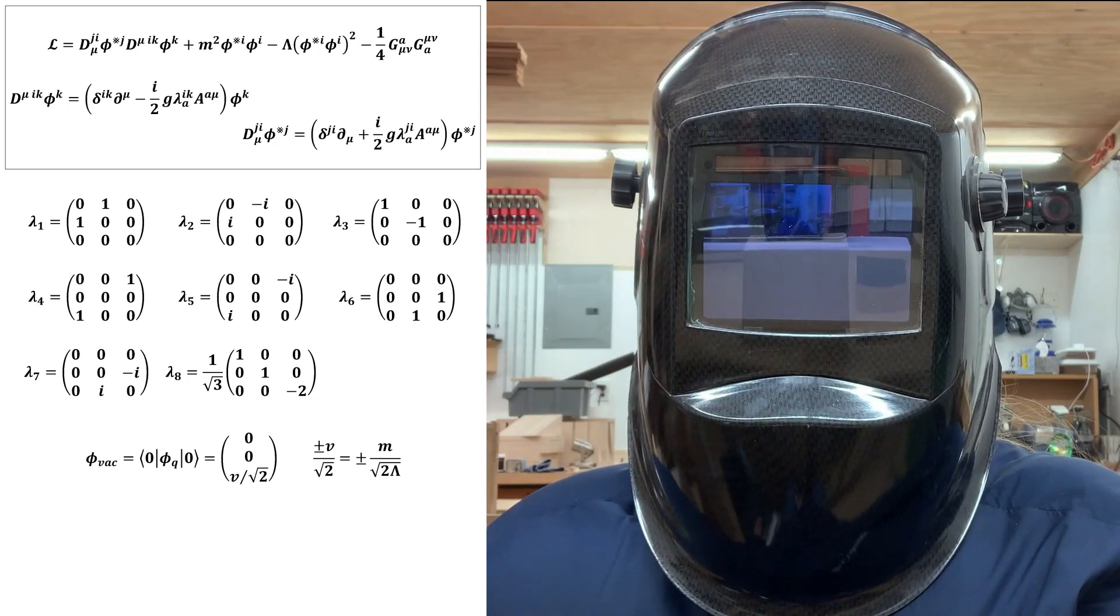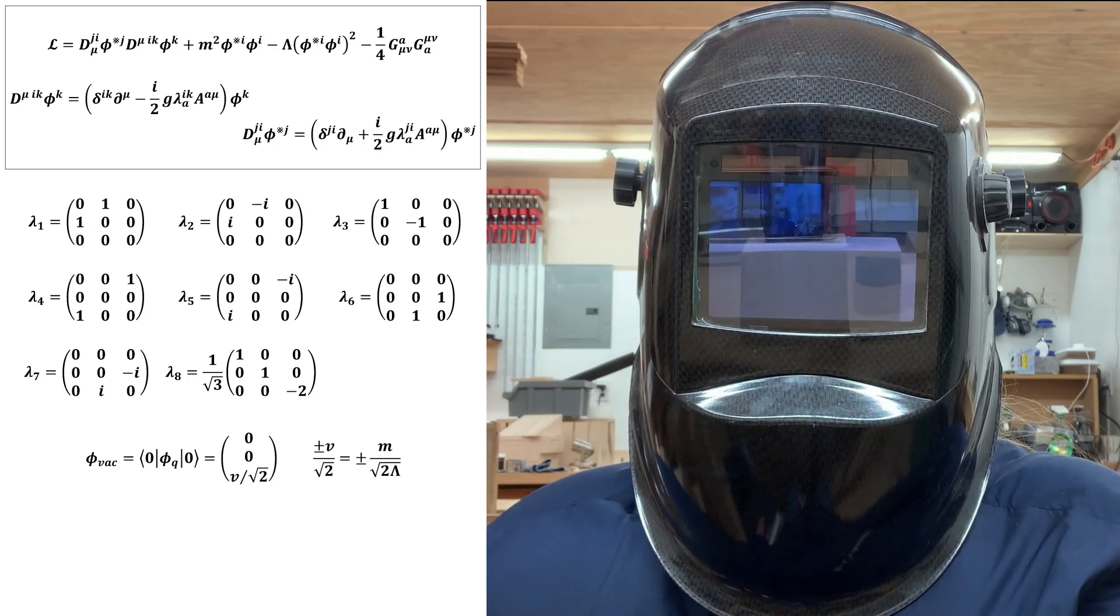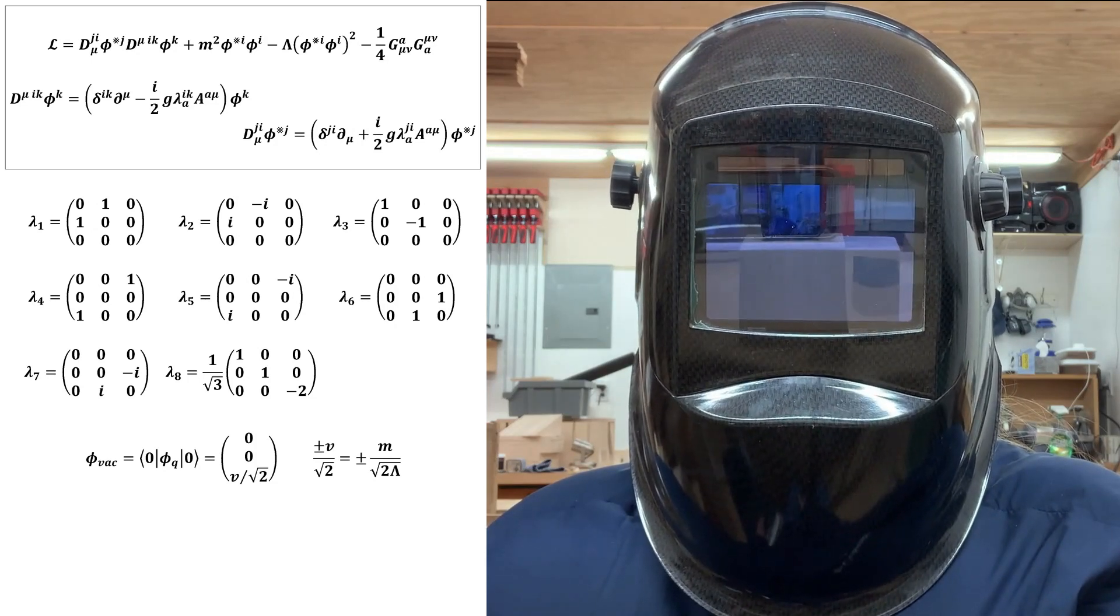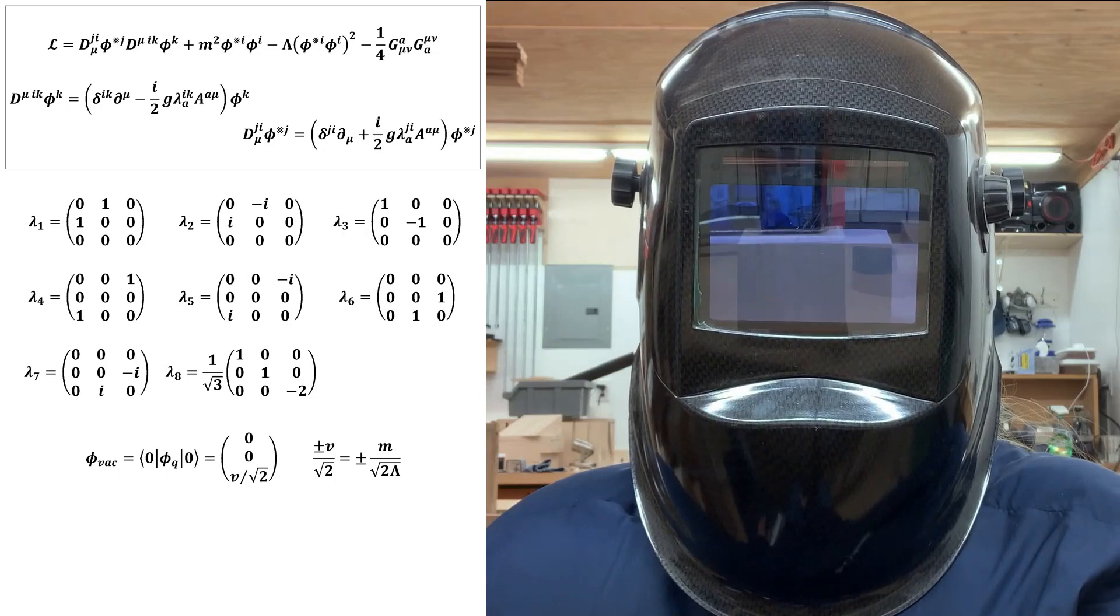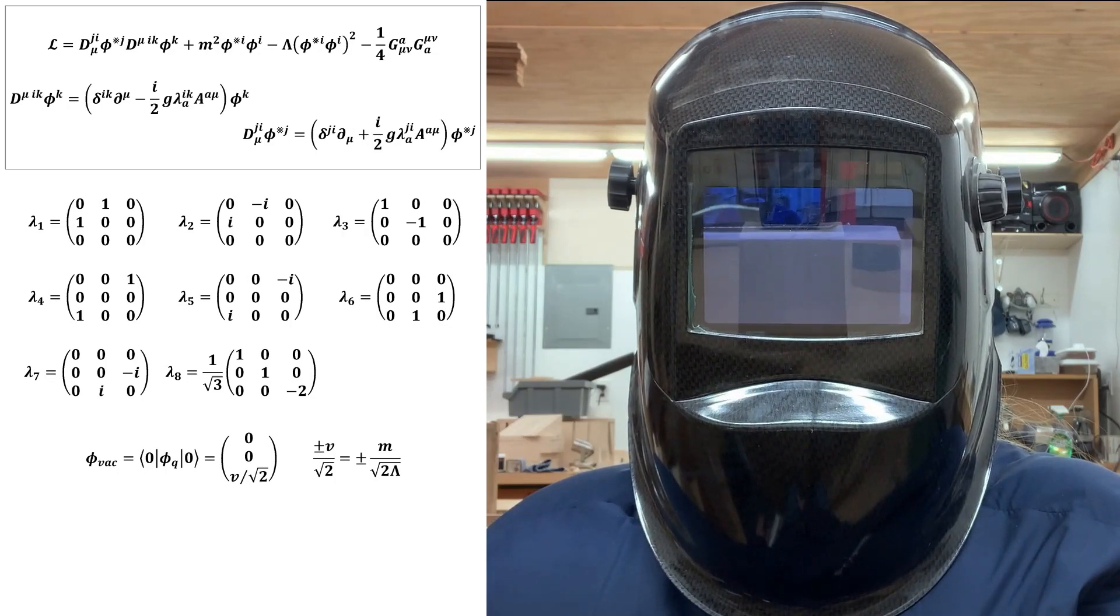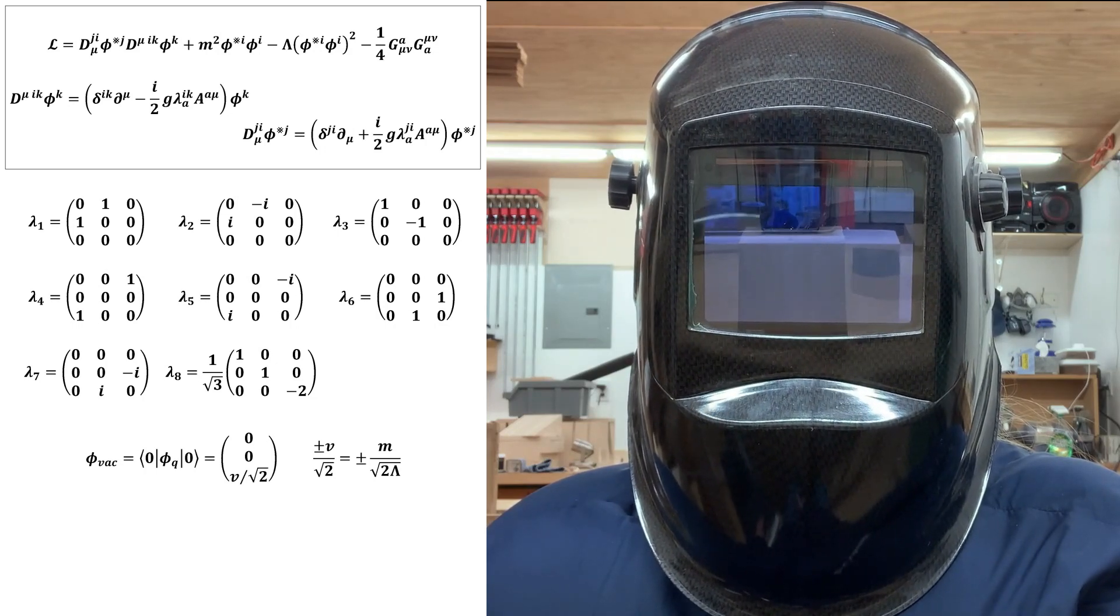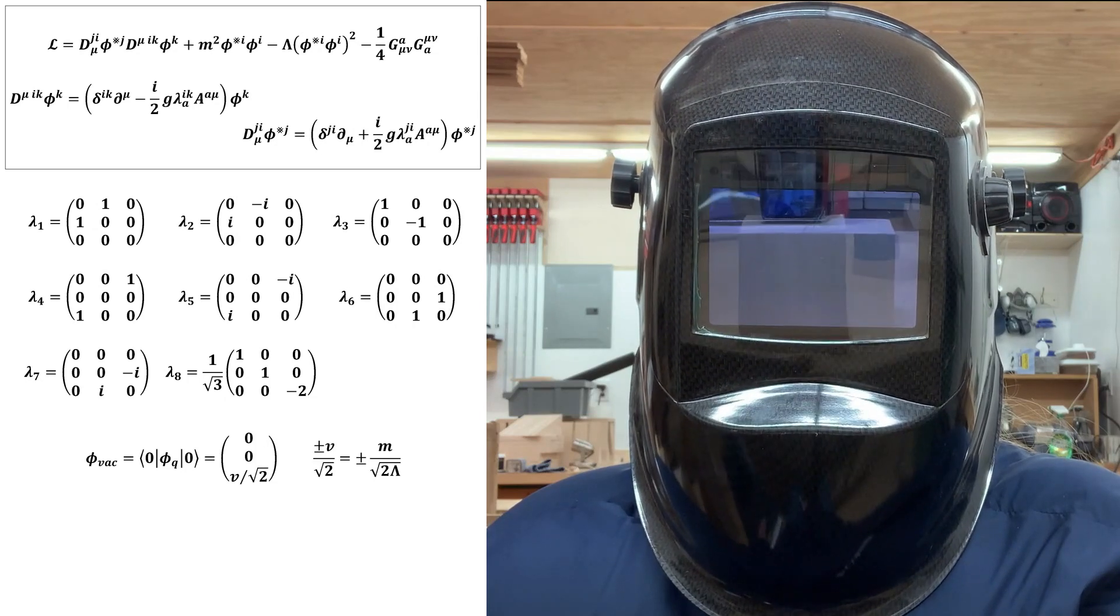Now let's actually calculate the spontaneously broken Lagrangian density and show that Goldstone's theorem has predicted correctly. From this expression that we have here for the new vacuum about which we want to expand the theory, we can see that the complete set of linearly independent generators that annihilate it are the ones proportional to the first three Gell-Mann matrices.